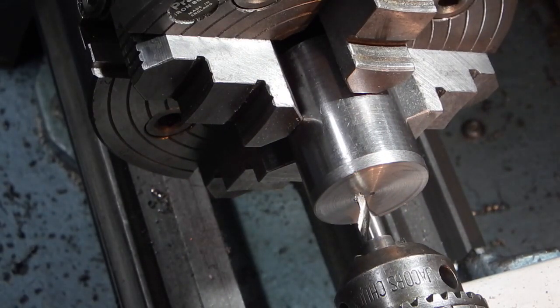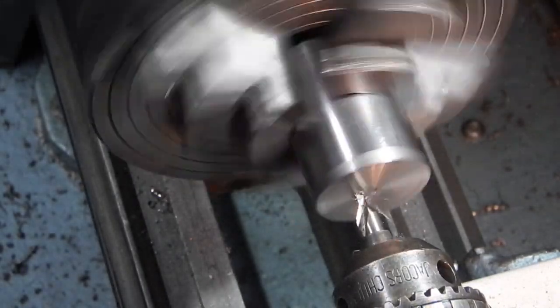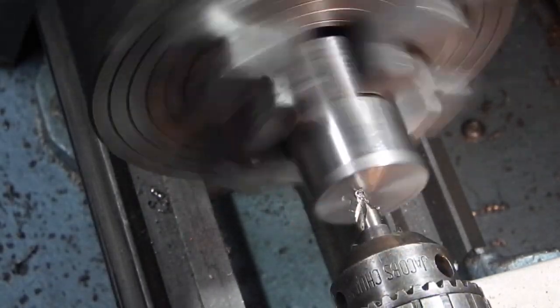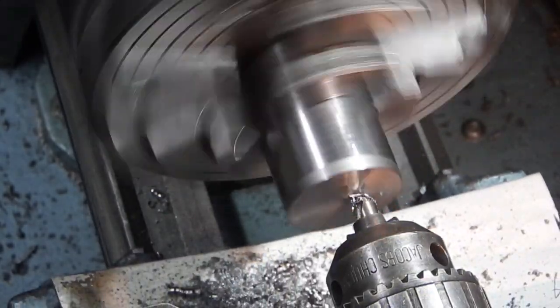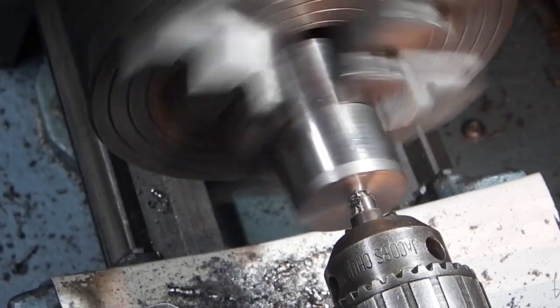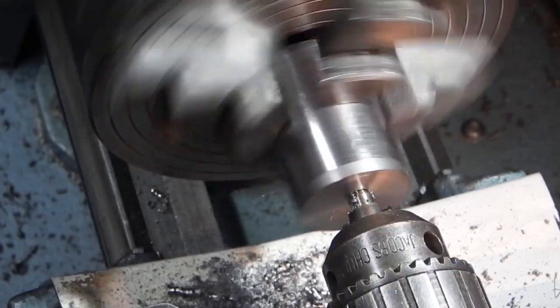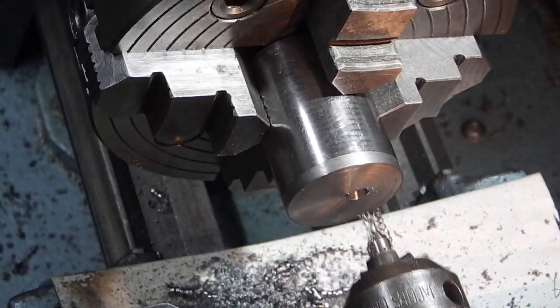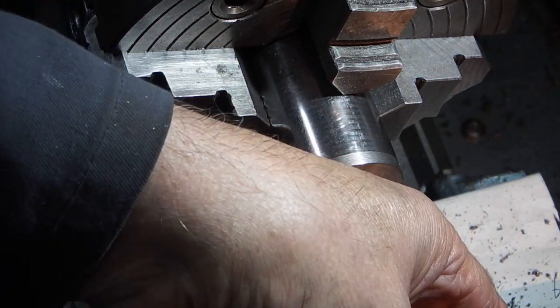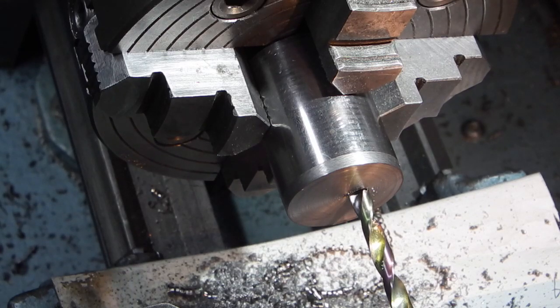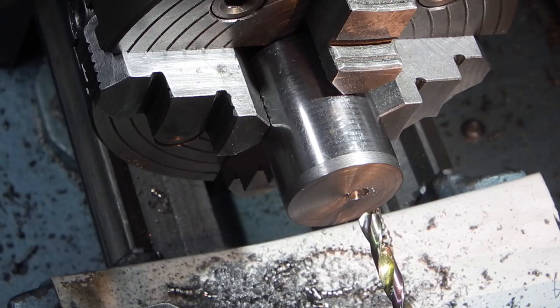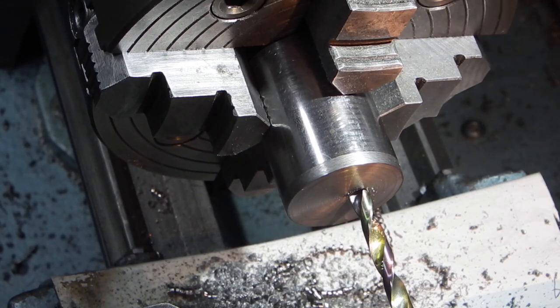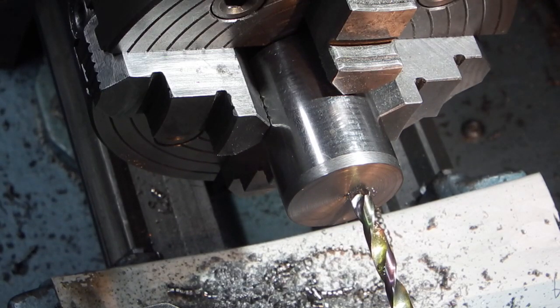I'll use a seven mil drill to put the bolt through. I'm zeroing my tail stock off. I'm zeroing my tail, I'll go in 40 mil.